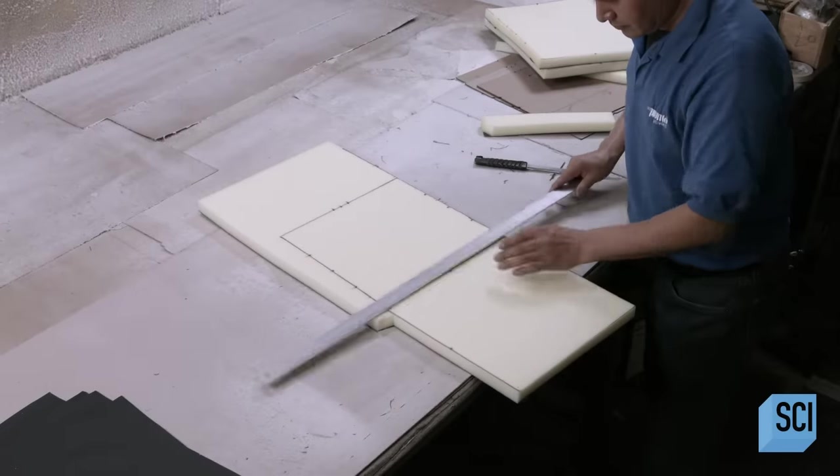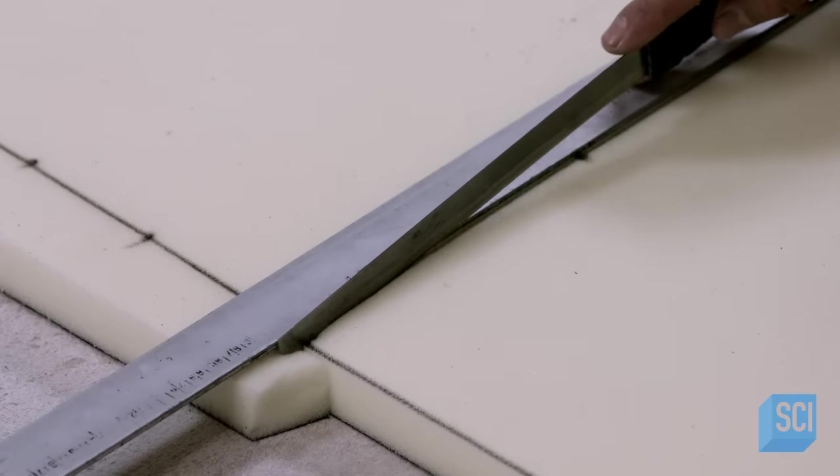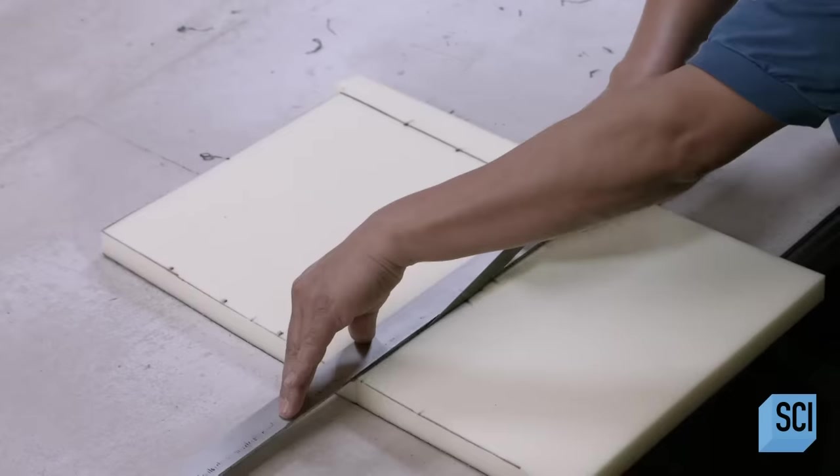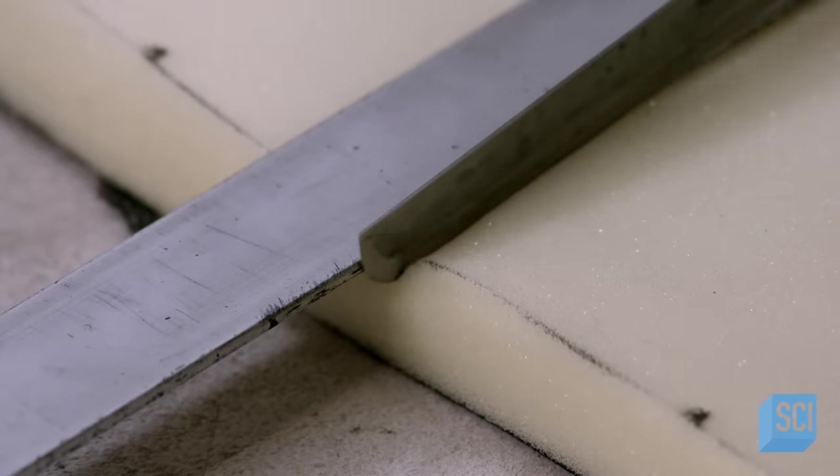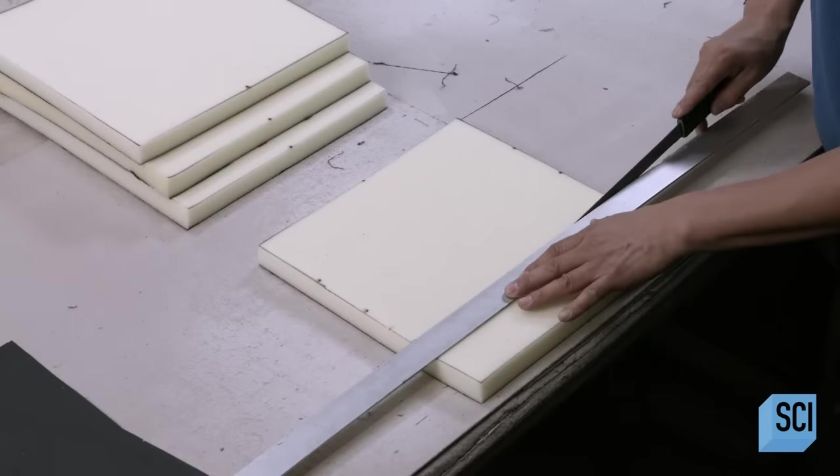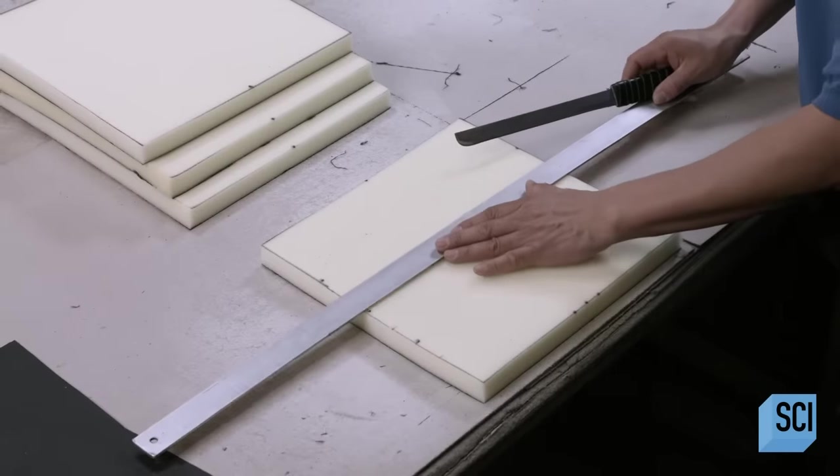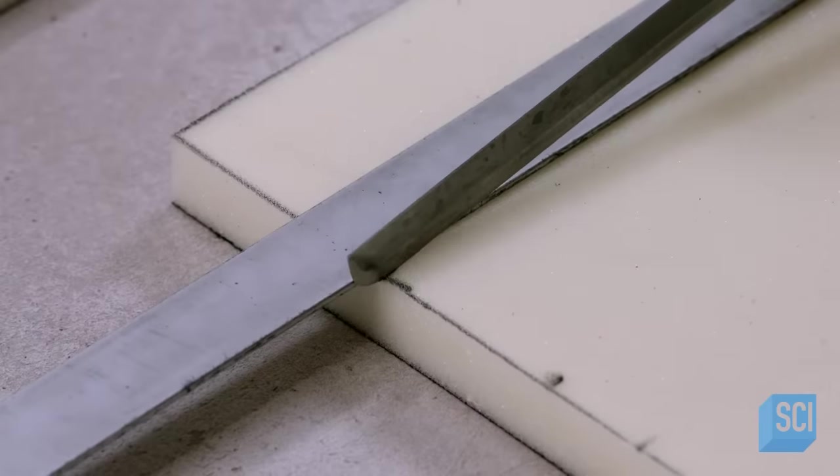Another worker selects softer foam for the part of the chair that the occupant's back will rest against. He cuts slits into this softer back padding. This creates channels that will ultimately become a design feature.